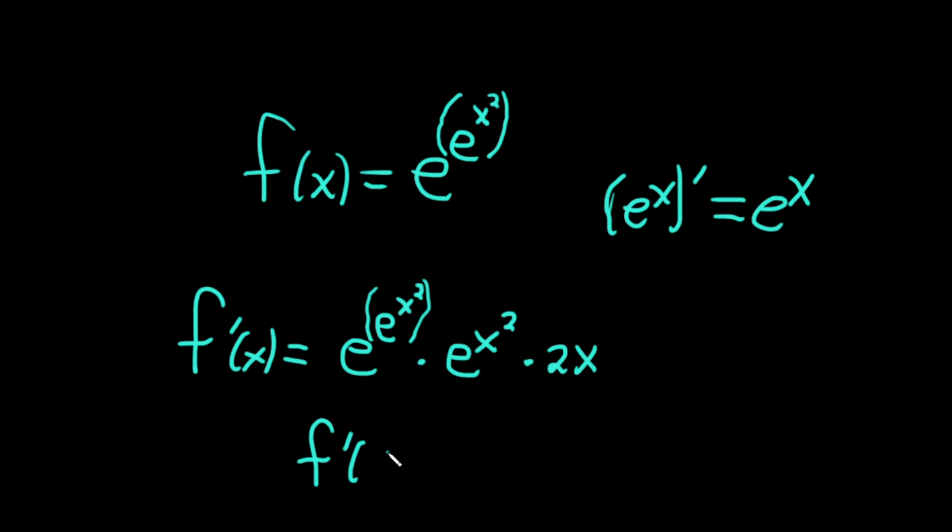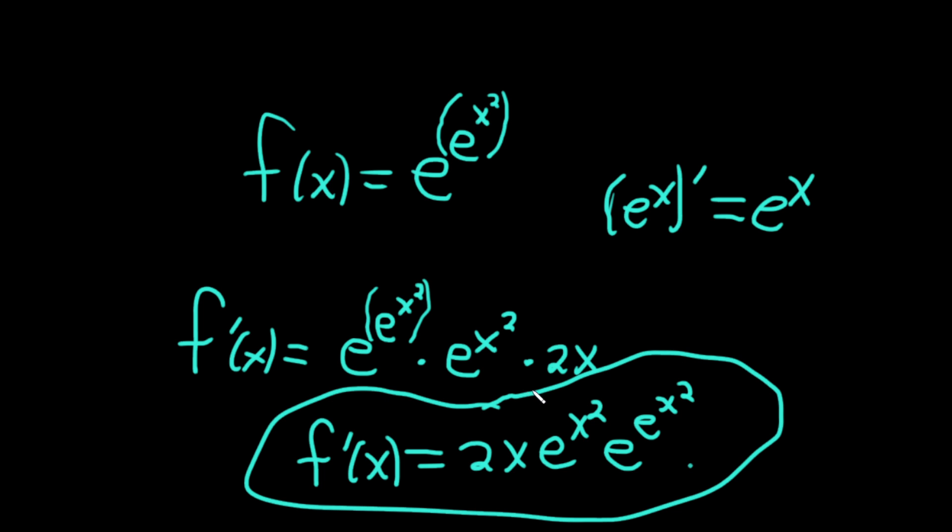So rewriting this, we have that the derivative of f is equal to 2x e to the x squared, e to the e to the x squared. Pretty cool, huh? So just an interesting derivative. I hope it's been helpful. Good luck.